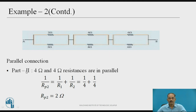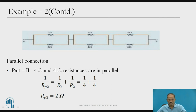Similarly, for the second parallel connection — 4 Ω and 4 Ω are in parallel. Their equivalent resistance: 1/Rp2 = 1/R1 + 1/R2 = 1/4 + 1/4. Simplifying, Rp2 = 2 Ω.